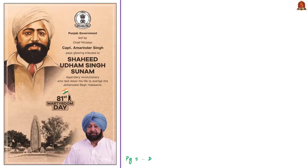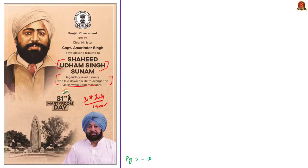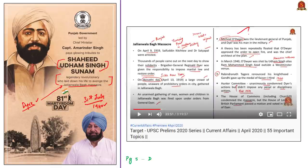This advertisement from the Punjab state government pays tribute to Sri Udham Singh, a legendary revolutionary who laid down his life to avenge the Jallianwala Bagh Massacre. On this day — July 31st, 1940 — Udham Singh was hanged in London, charged with the murder of Michael O'Dwyer, the former Lieutenant Governor of Punjab, who reportedly played a very important role in approving Brigadier General Reginald Dyer's firing at innocent men, women, and children gathered at Jallianwala Bagh on April 13th, 1919.